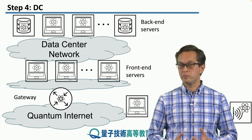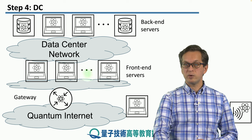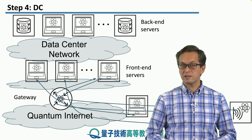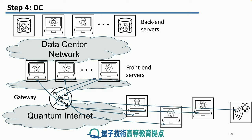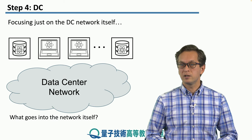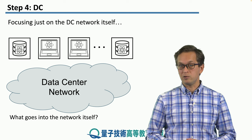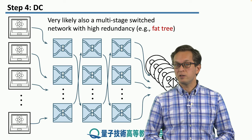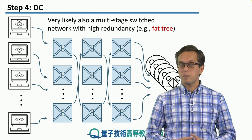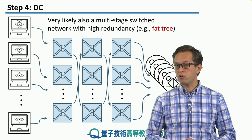Here we have an image of a multi-tiered quantum data center network. We can see the front-end servers that communicate with the clients, process their quantum requests, and pass them on to the relevant quantum resources through the quantum data center network to the back-end servers. In such a multi-tier scenario, the quantum data center network is not going to be very different from a multi-staged switched network, but including high redundancy — for example, in the form of a fat tree.